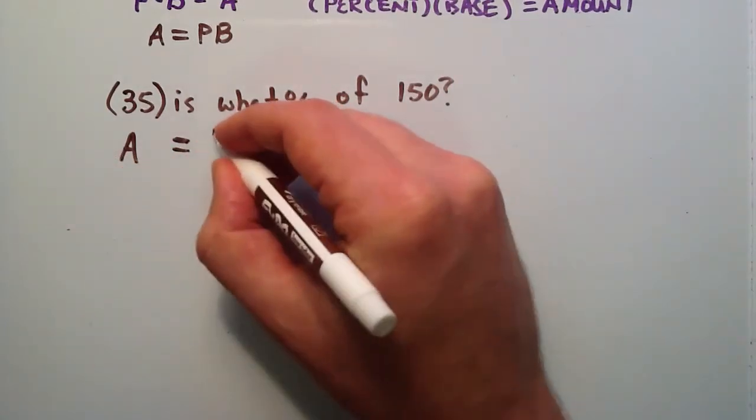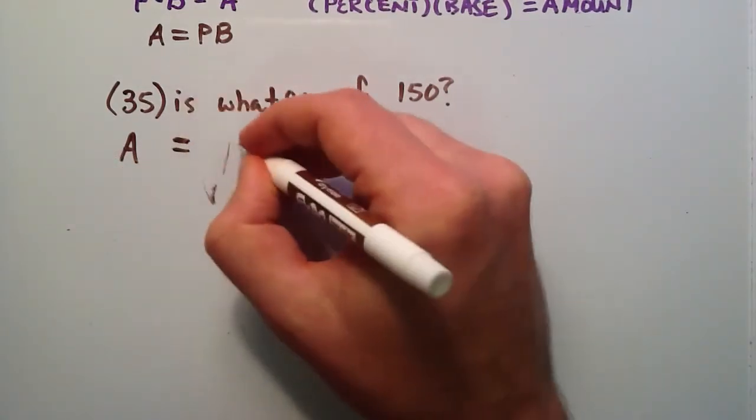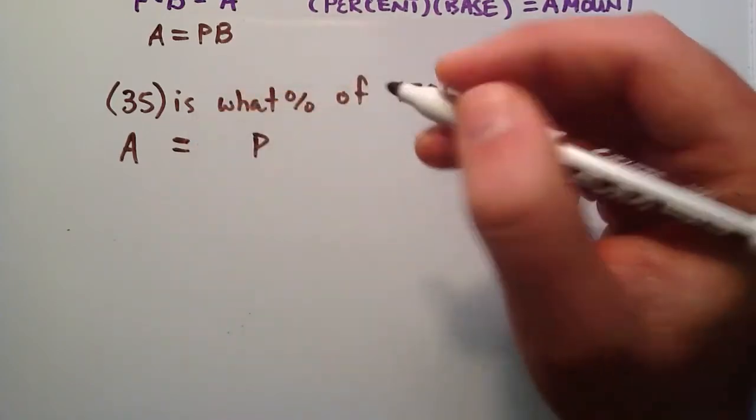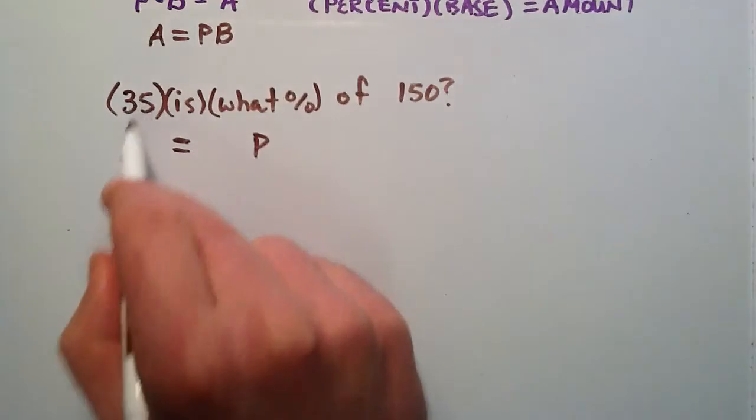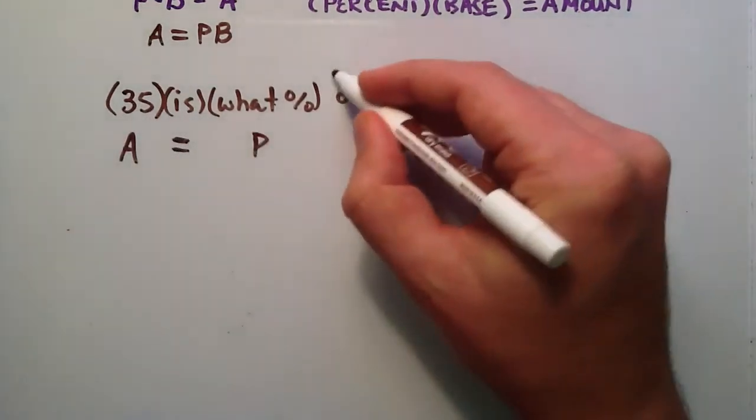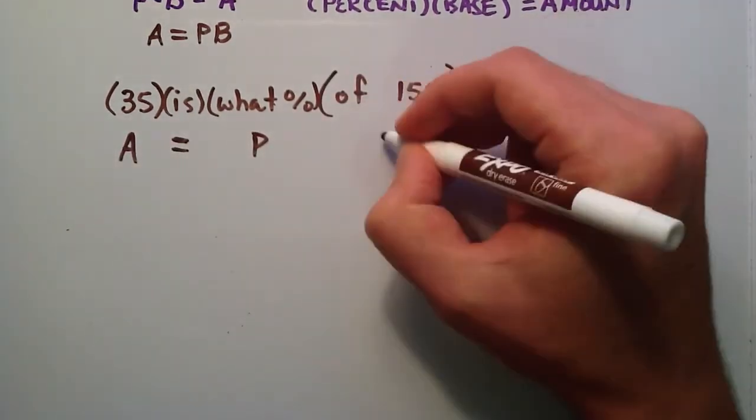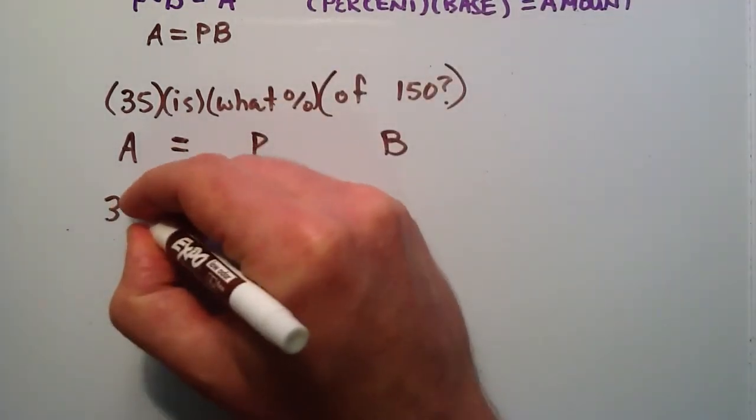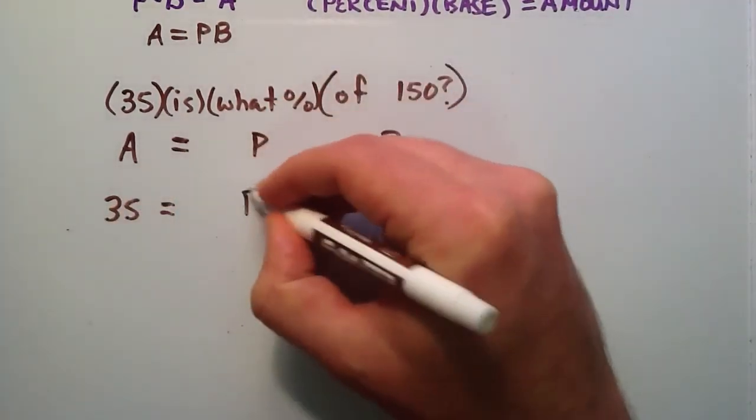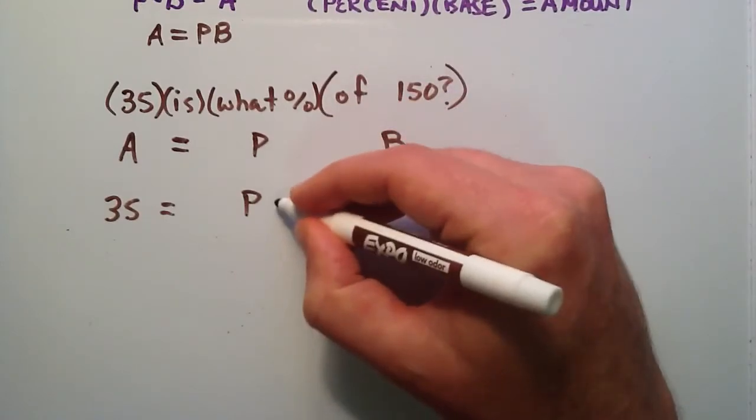A is, and then what percent is our P. This is our P. This is our equals. A equals P and B. In our case we have 35 equals the percentage of our base.